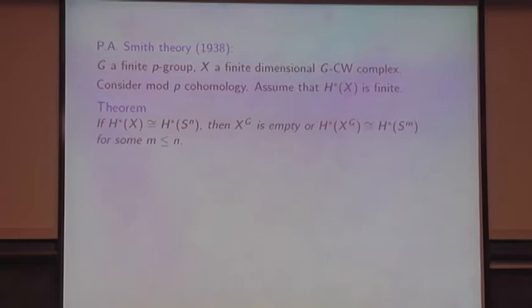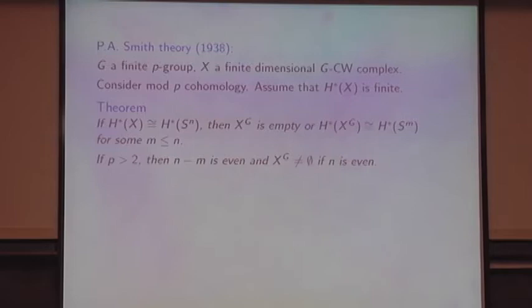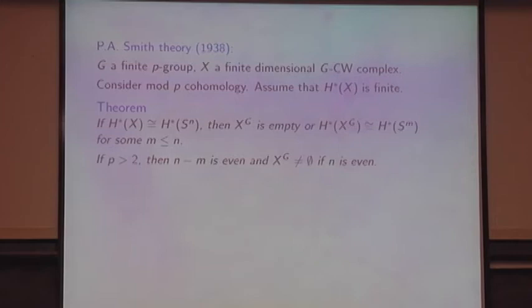Theorem: If the cohomology of X looks like the cohomology of an N-sphere, then either the G fixed point set is empty, or its cohomology is the same as the cohomology of an M-sphere for some M less than or equal to N. If p is odd, you can refine this: N minus M has to be even, and if N is even, then you can't have the alternative with the empty fixed point space. That should look not at all obvious. Any G-space can be approximated up to weak equivalence by a GCW complex, so restricting to GCW complexes is not a big restriction — it's the natural world in which to work.